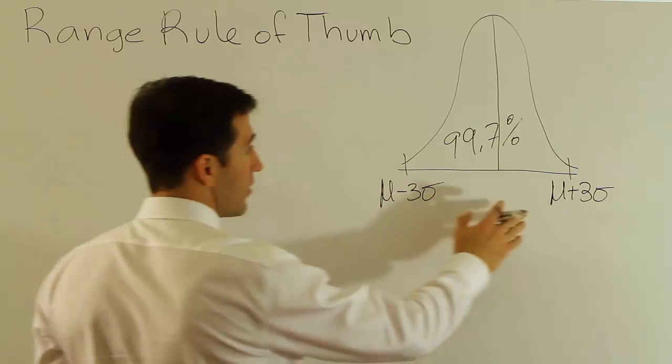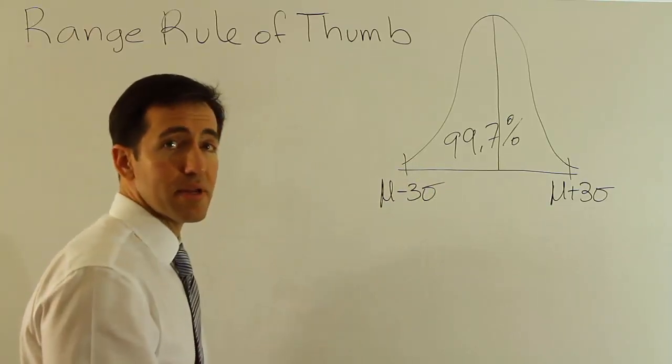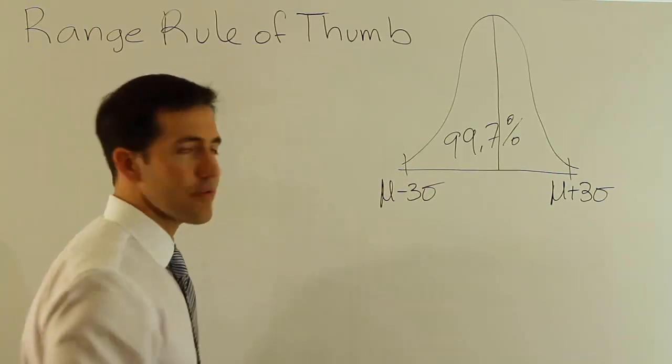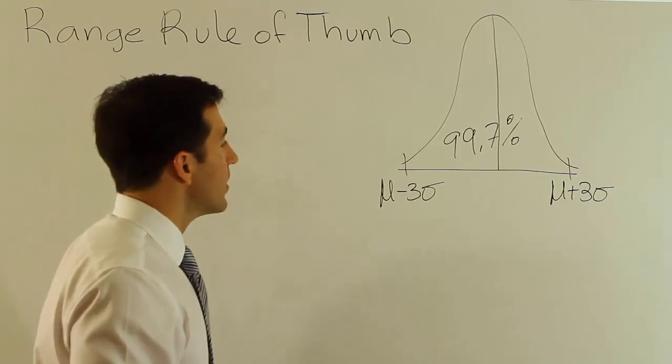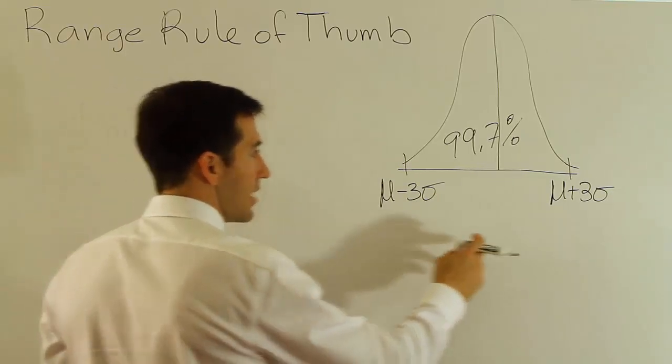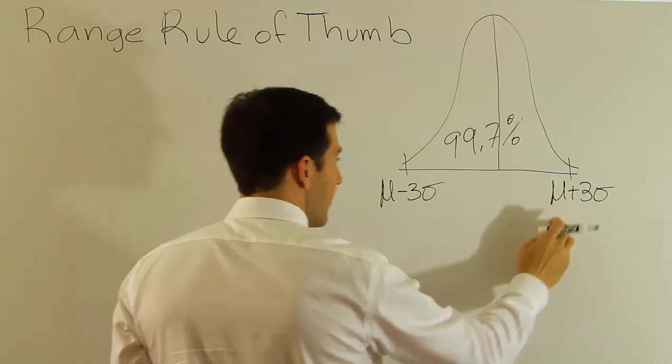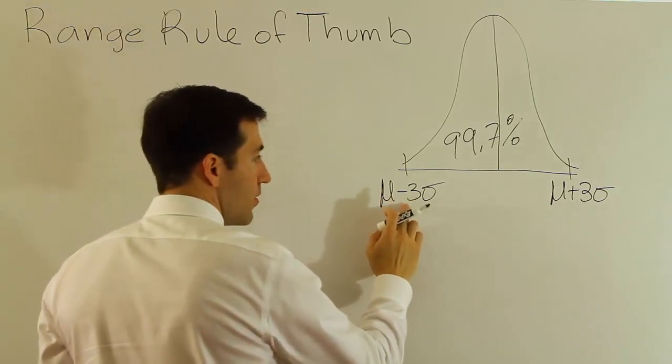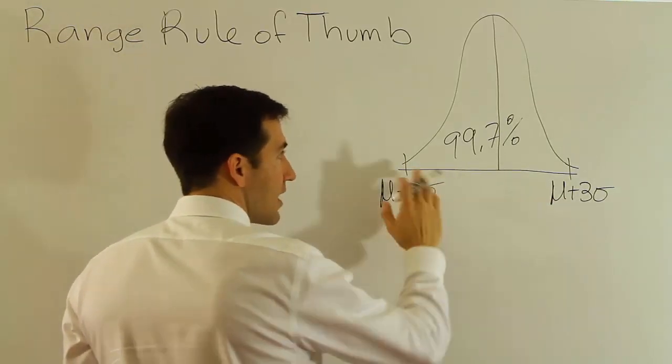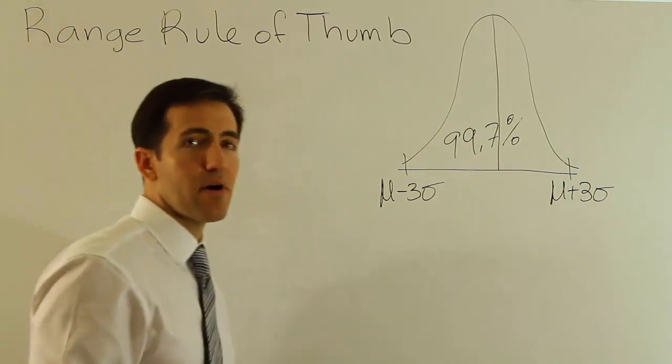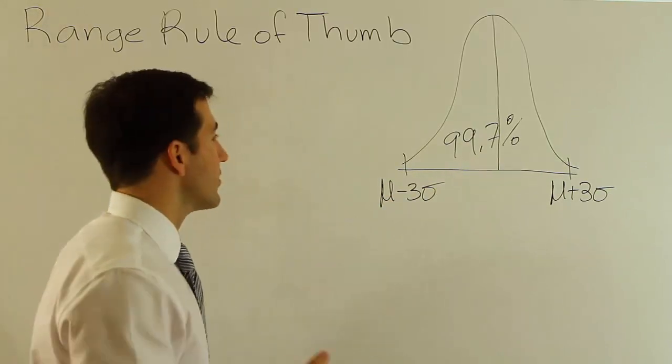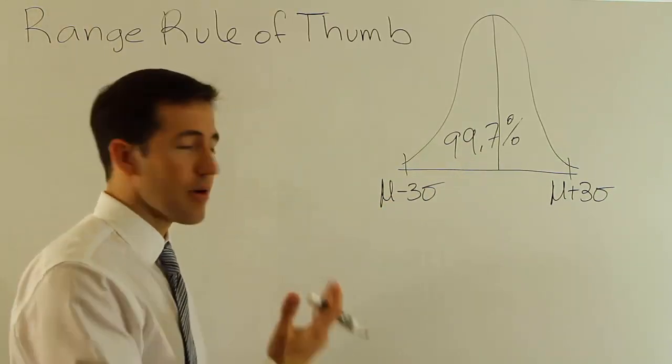So I've drawn a bell curve on the board. We know that not all data is bell-shaped in nature, but we're just going to use this for a rule of thumb here at the moment. And if I drew a bell curve and I label three standard deviations above the mean, three standard deviations below the mean, that span captures 99.7% of all the data on the bell curve. That's according to the empirical rule. That's a property of the bell curve.